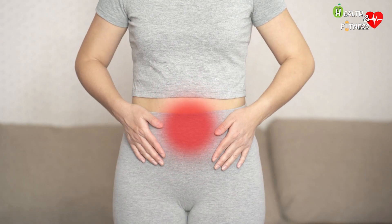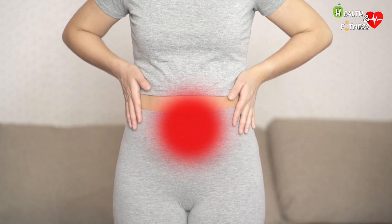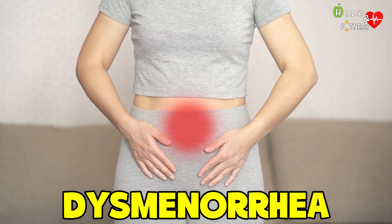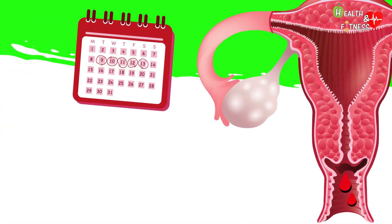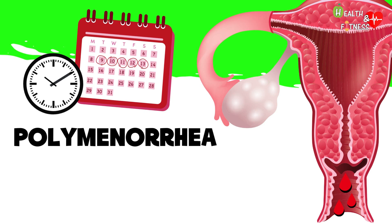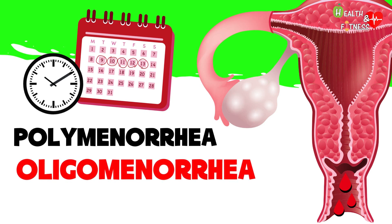Menorrhagia is often associated with abdominal cramps so severe that they interfere with daily activities, in which case the term dysmenorrhea is used. In women suffering from hyperthyroidism, an irregular menstrual cycle may be recorded: menstruation occurring too close together (polymenorrhea), more than four days late (oligomenorrhea), or disappearing for at least three months (amenorrhea).